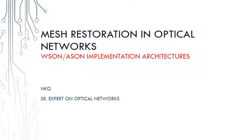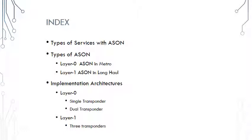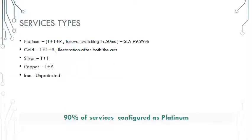Good evening everybody. Today I will explain mesh restoration in optical networks. Mesh restoration is defined by ITU-T as ASON, automatically switched optical networks, and there is another name for it in the industry called WSON. The topics we will cover include types of services defined in ASON, architectures in ASON at layer 0 and layer 1, and typical deployment scenarios. Implementation architectures include single transponder and dual transponder approaches at layer 0, and a three-transponder approach at layer 1.